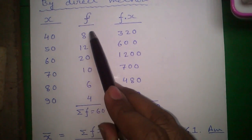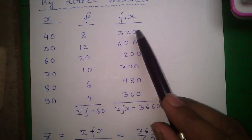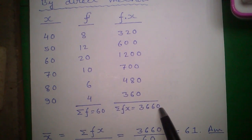Next find out sum of F. So sum of F equals to sum of all the numbers equal to 60, and sum of FX equals to 3660.